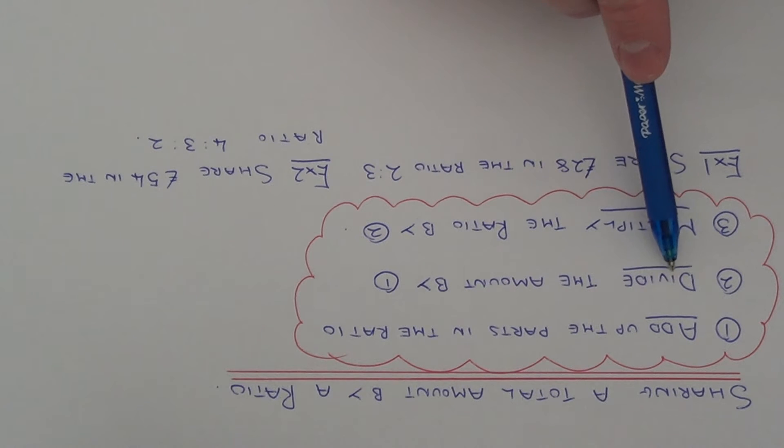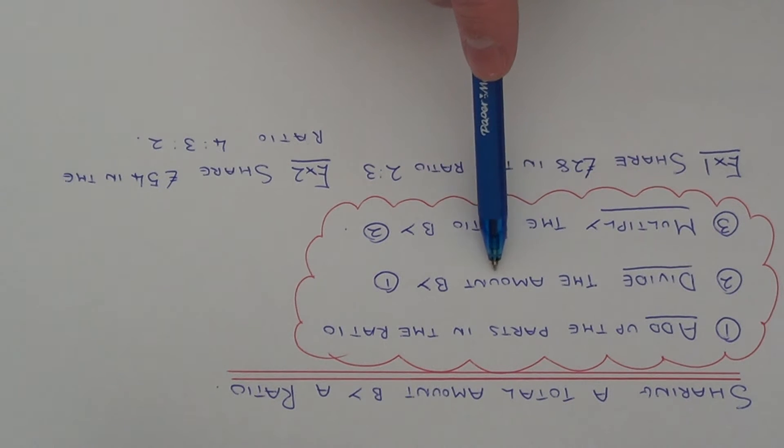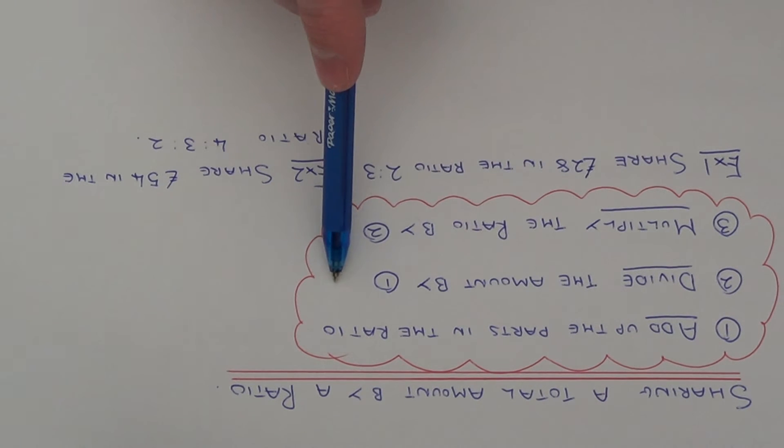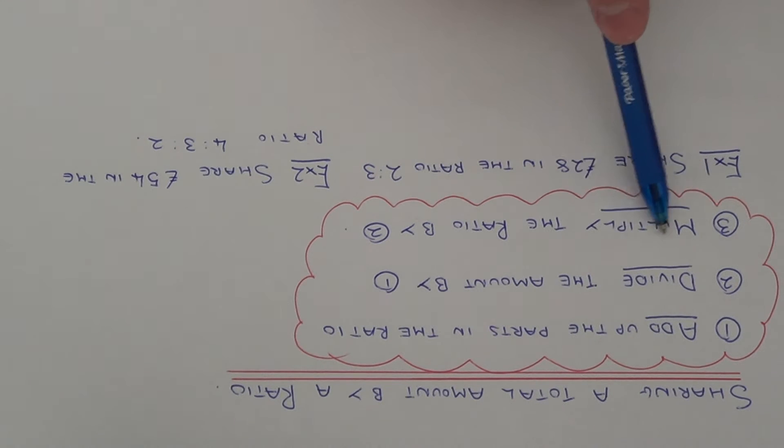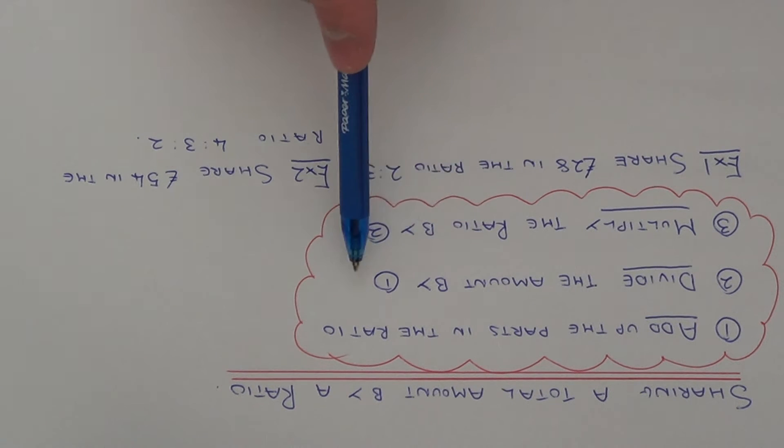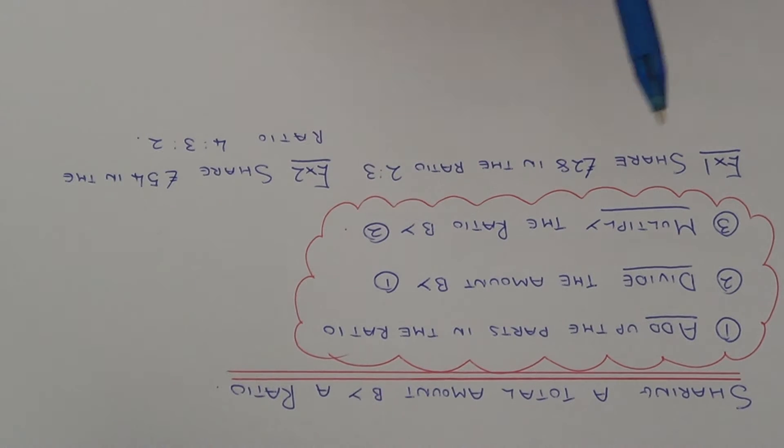The second step you divide the total amount by your answer from step one. So this will give you the value of one part. And then the third step you multiply the ratio by your answer from step two. So let's apply this to these two examples.